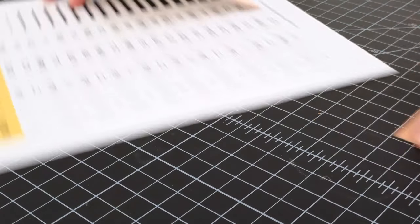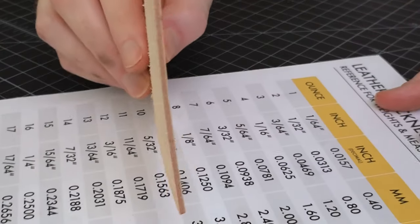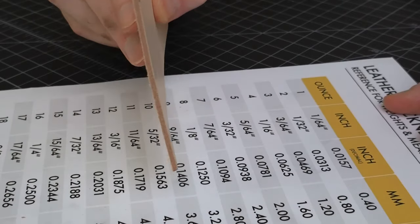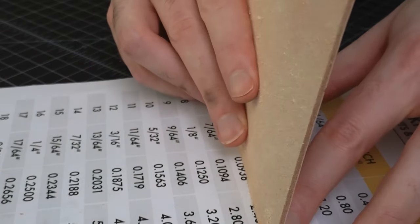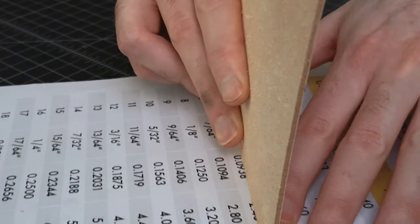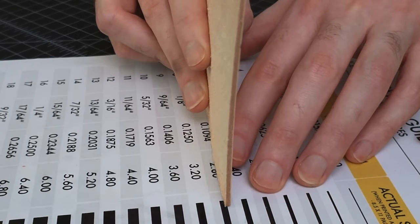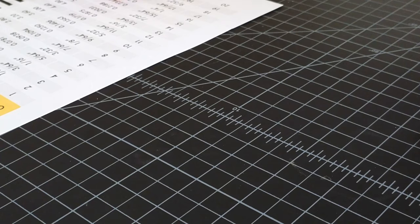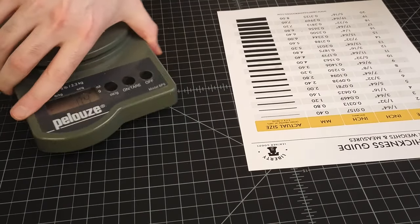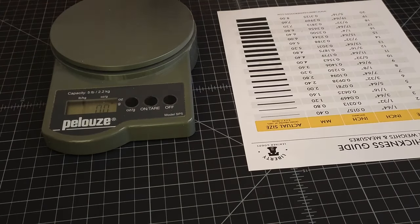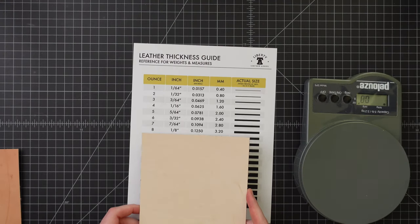And then if we come over here to our handy weights and measures and just line this up, this will be between five and six as well. So now we've literally checked the thickness, we've checked the weight with the scale, and we can see that's how we get the leather weight.